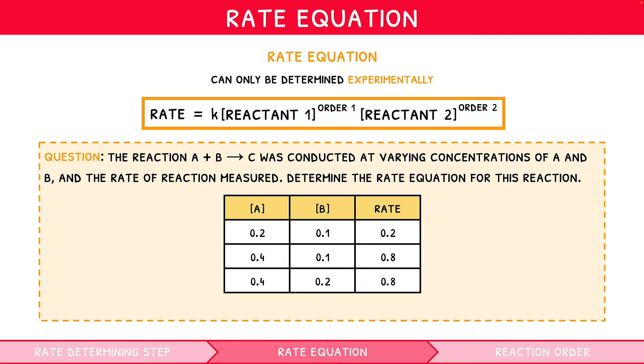Let's start with A. We select reactions 1 and 2, since A doubles whilst B remains constant, allowing us to see the effect of changing the concentration of A alone. We can see that as the concentration of A was doubled, the reaction rate increased fourfold. Therefore, this reaction must be second order with respect to A.